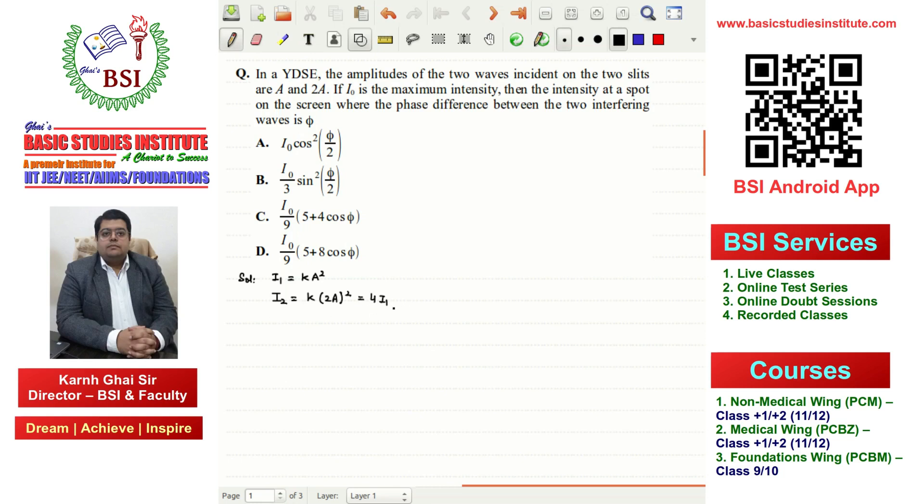The maximum intensity in Young's Double Slit Experiment is given by the formula: I_max equals (√I1 + √I2)². You have maximum intensity when you square the sum of the square roots.